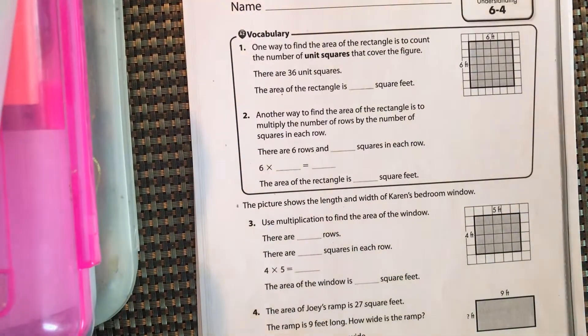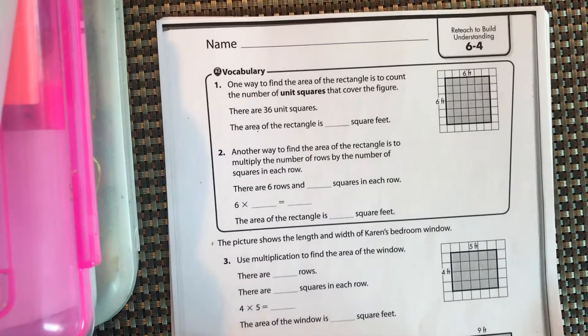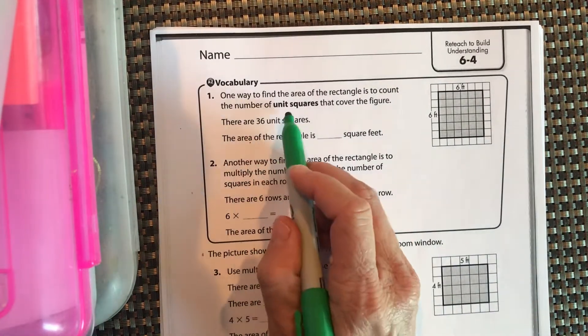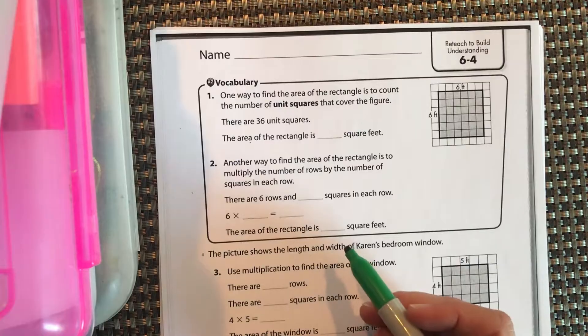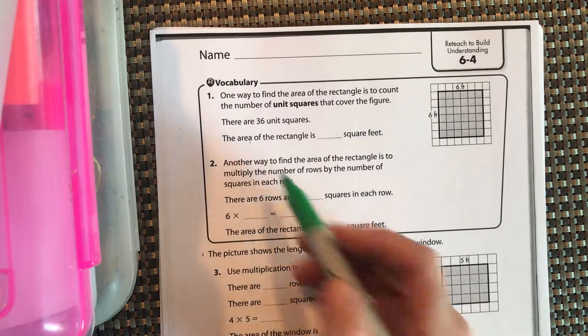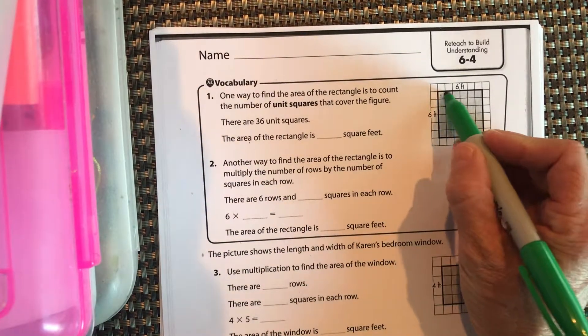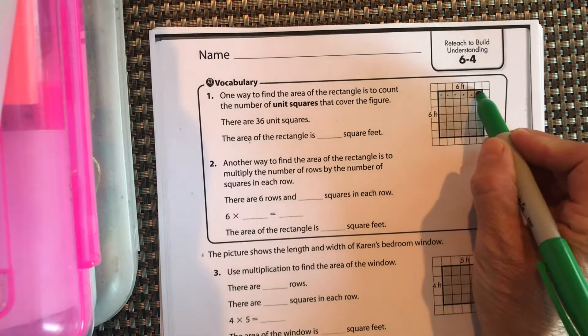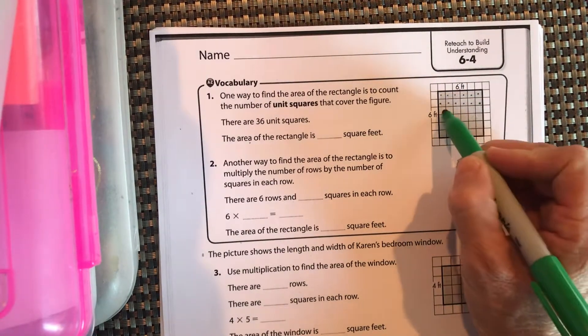One way to find the area of a rectangle is to count the number of unit squares that cover the figure, which is what we've done up until now. So we've gone 1, 2, 3, 4, 5, 6, 1, 2, 3, 4, that's 12.